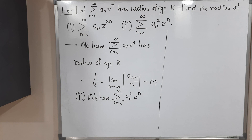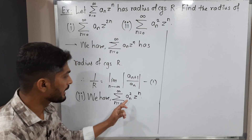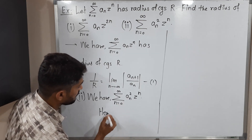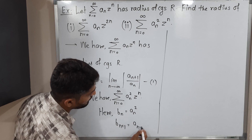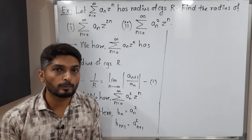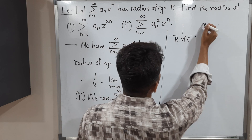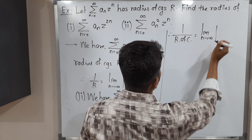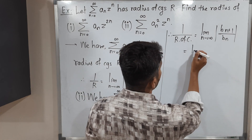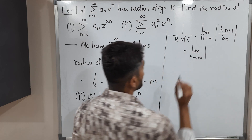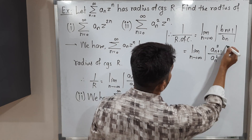Now for the second power series: summation n from 0 to infinity, (a_n)² z^n. Here the coefficient is (a_n)², so let us call it b_n. So b_n = (a_n)², and therefore b_{n+1} = (a_{n+1})². Now applying the formula of radius of convergence: 1 over the radius of convergence equals lim_{n→∞} |b_{n+1}/b_n|, which equals lim_{n→∞} |(a_{n+1})²/(a_n)²|.